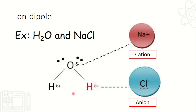Example, yung ating water molecule, which is a dipole molecule, dumikit kay sodium chloride — which is ions. Ions yung ating sodium and chlorine dahil masyadong mataas yung electronegativity nila. So yung negative side nito didikit kay positive side ng ion, yung positive naman didikit kay negative side ng ion. So pag pinaghalo mo yung water saka yung sodium chloride, ion-dipole yung interaction sa kanila.